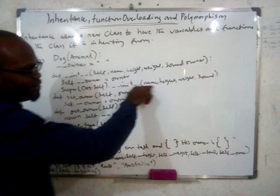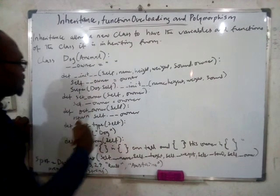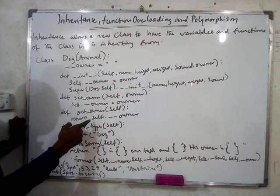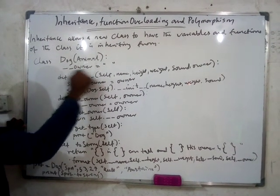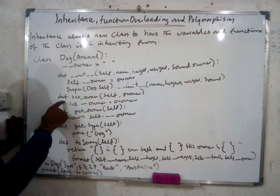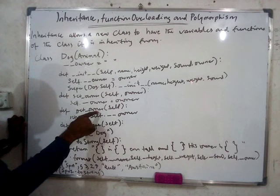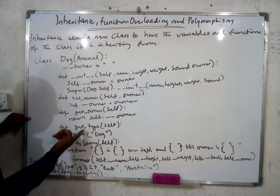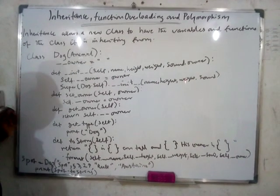So you call the superclass so that you can get all the features like name, height, weight, and sound. Then you do the normal setter and getter for the new feature 'owner' that you introduced — this new variable. So this is the setOwner and this is the getOwner, just the way we did it in the former one. So now do the getType function.